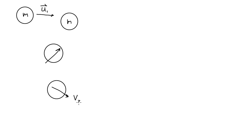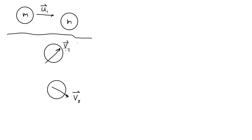So v2 is the final speed of the target ball and v1 is the final velocity of the cue ball. We want to prove that v1 and v2 are perpendicular to each other after the collision.